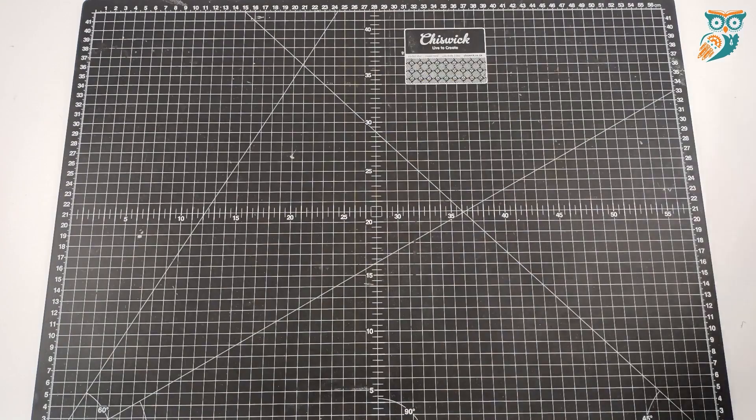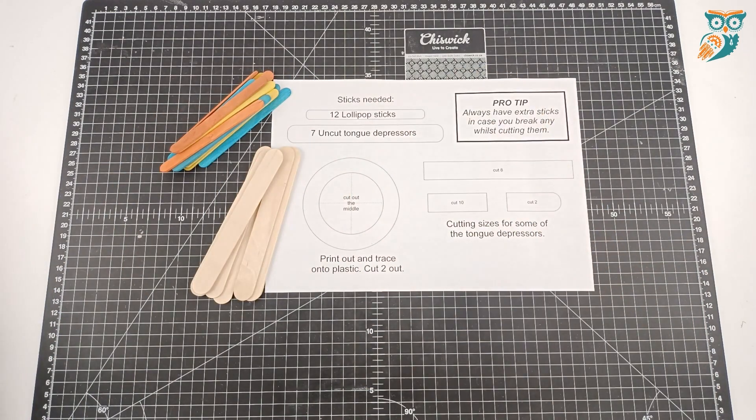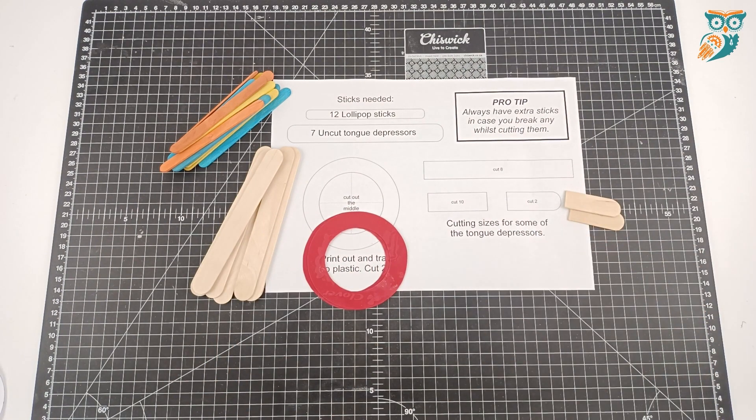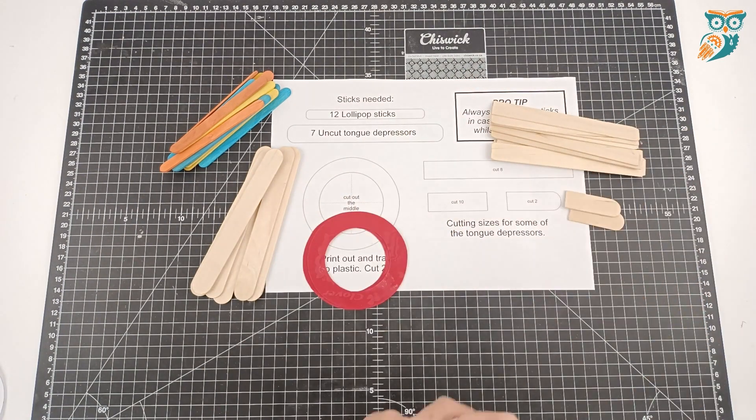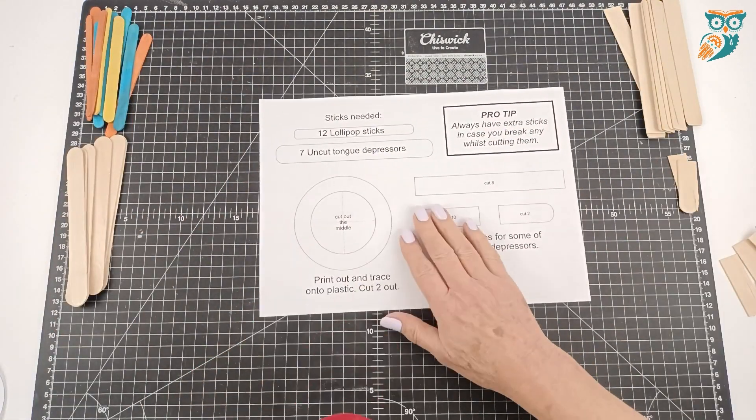We're going to gather up our supplies. There's nothing really crazy here that you need, and the templates are available on the STEAM Powered Family website. You'll want to cut your materials to the appropriate lengths that are all indicated on the templates, and these are available free of charge.